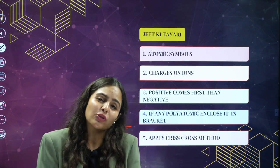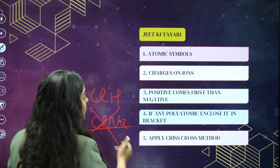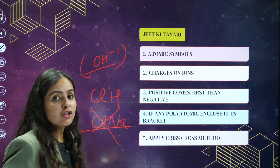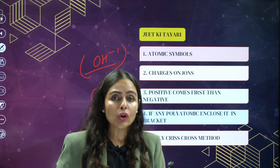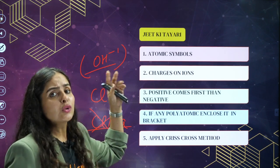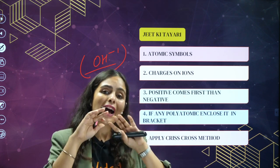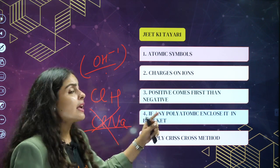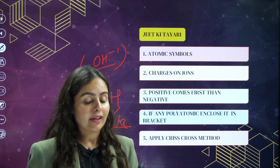If any polyatomic ion is there, let's put a little respect to them and enclose them in brackets. Polyatomic ions — say OH minus — are groups of atoms with a common charge. We call them polyatomic ions; poly means many. For example, sulphate ion SO4 2 minus. If you see a polyatomic ion in the formula, you have to enclose them in brackets. And lastly, we apply the criss-cross method.